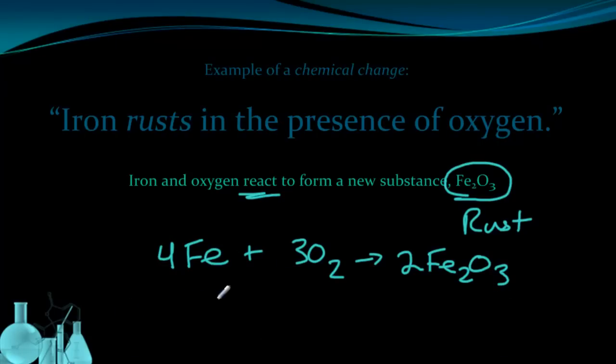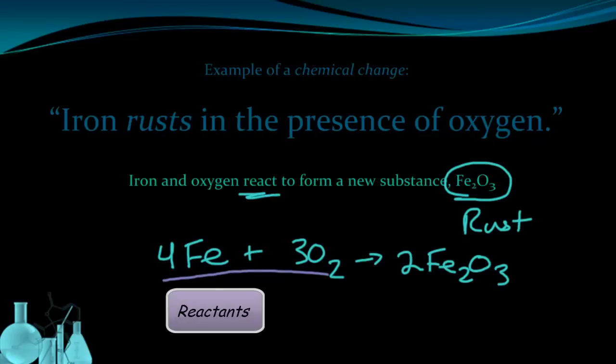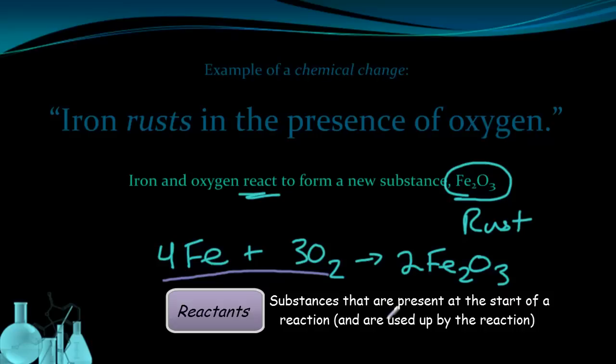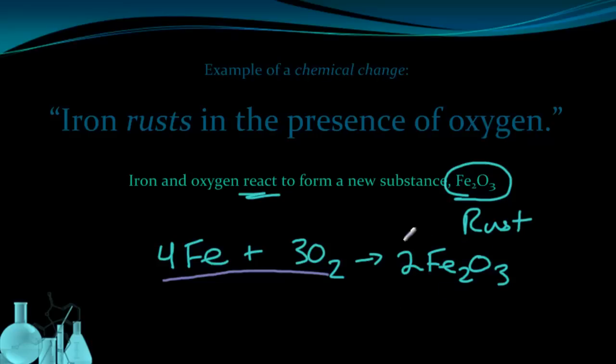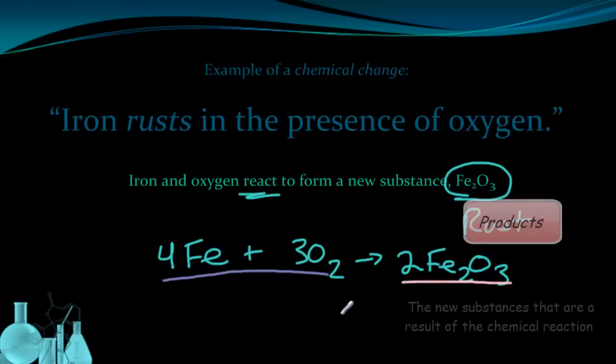There's some terminology associated with chemical equations that we should become familiar with. First is that the substances we start with, right here, the iron and the oxygen that we start with, these are called reactants. Reactants are the substances that are present before the chemical reaction proceeds. After the reaction's proceeded and we produce the rust, that is called the product. So basically reactants are what we start with, products are what we end up with.